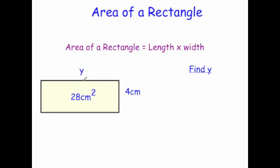And some of you may be able to work that out really quickly. So the area is equal to length times width. So the area is 28, and that's equal to the length y times 4. And then you just do 28 divided by 4. So 28 divided by 4 would be equal to 7.